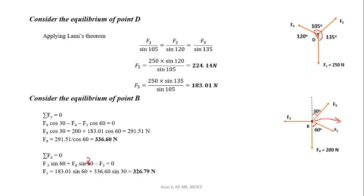In summary, the forces in the cable segments are: F2 (segment DE) = 224.14N, F3 (segment BD) = 183.10N, F6 (segment BC) = 336.60N, and F5 (segment AB) = 326.79N.